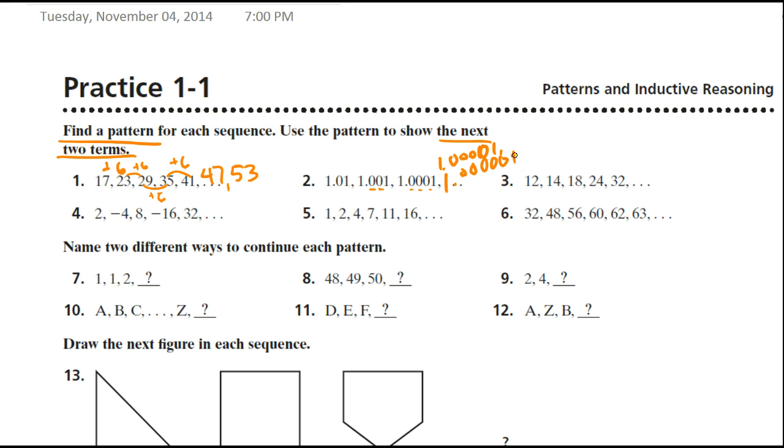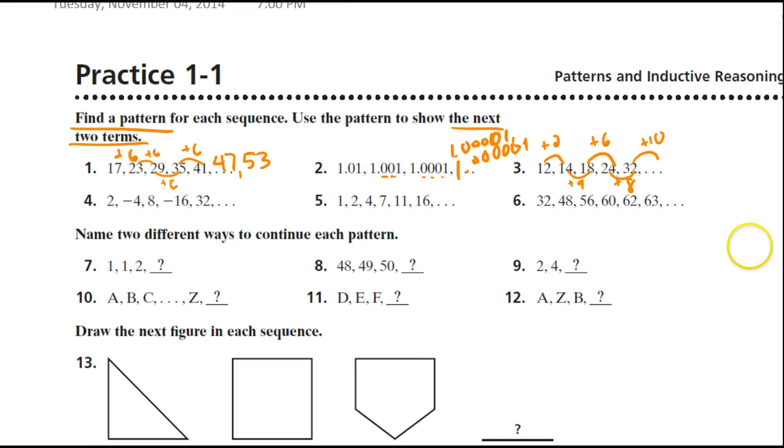How about this? From 12 to 14, I add 2. From 14 to 18, that's adding 4. 18 to 24, that's adding 6. Adding 8. Do you see the pattern? We're adding even numbers. So that means the next term would be 42. And then, to get to that last term, I'll have to add 12, and that makes my final term 54.